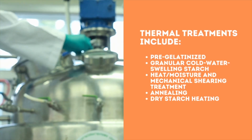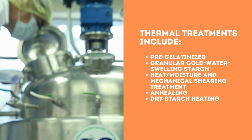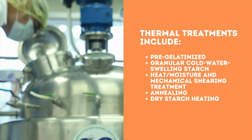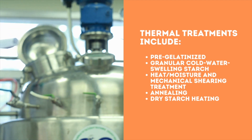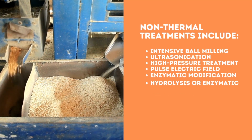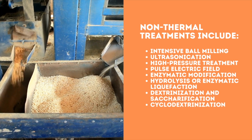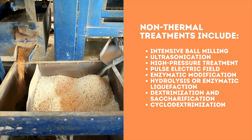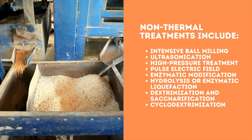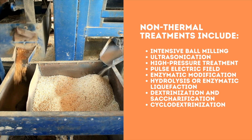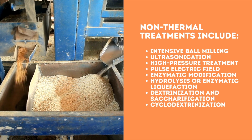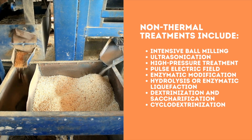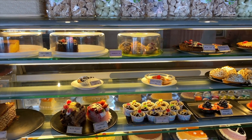Thermal treatments include pre-gelatinization, pre-cooked instant starches, granular cold-water swelling starch, heat-moisture and mechanical shearing treatment (HMT), annealing, and dry starch heating. Non-thermal treatments include intensive ball milling, ultrasonication, high-pressure treatment, and pulse electric field. Enzymatic modification of wheat starch includes hydrolysis or enzymatic liquefaction using different amylases, dextrinization, saccharification for fructose and glucose syrup production, and cyclodextrinization.